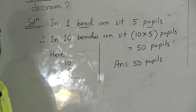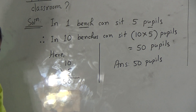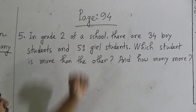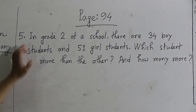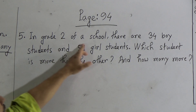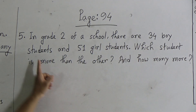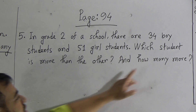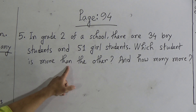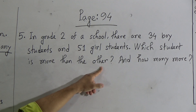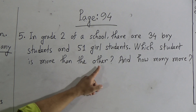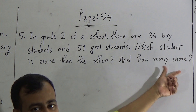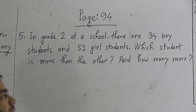I hope my dear students you have understood. Now go to the next problem. The next problem is question number 5 from page number 94. The question is: in grade 2 of a school, there are 34 boy students and 51 girl students. Which students are more than the others? This is the first question. The second question is: how many more?